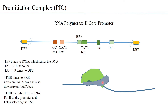TF2B is able to recruit TF2F and RNA polymerase 2 because it has domains that can directly interact with RNA polymerase 2. Many studies have reported that TF2B actually helps RNA polymerase select the transcription start site and also the template strand.